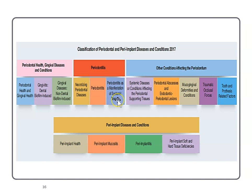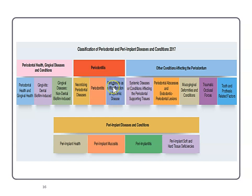The systemic disease category refers to conditions like uncontrolled diabetes — a systemic disease, meaning something happening inside your body. Someone not taking care of their diabetic condition, not exercising, not taking medications, not watching their diet, who also has perio — you would put them in this category.